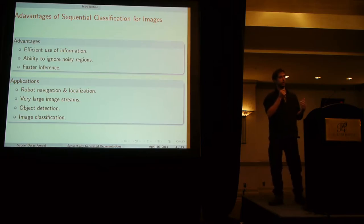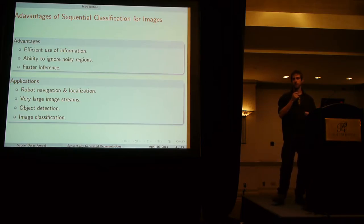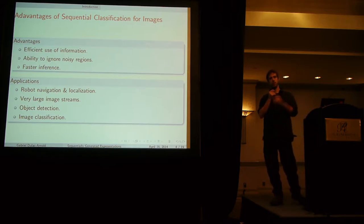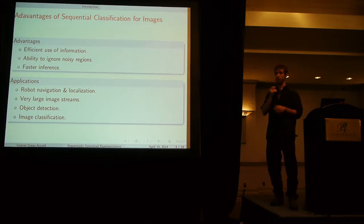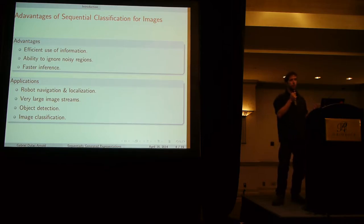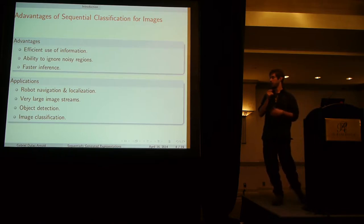Additionally, we'll see that in some cases we have an ability to ignore noisy regions. We're going to be able to actually classify better on some datasets because we're not going to be looking at the whole image but only looking at the important regions for classification. If we have some sort of very heavy processing stage we're going to be able to do faster inference.